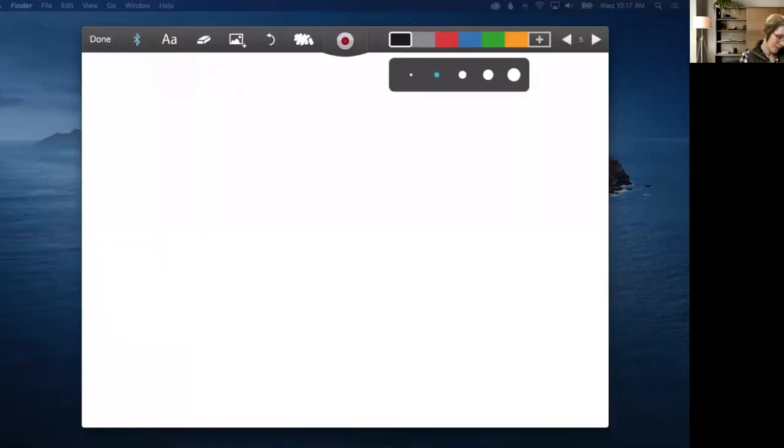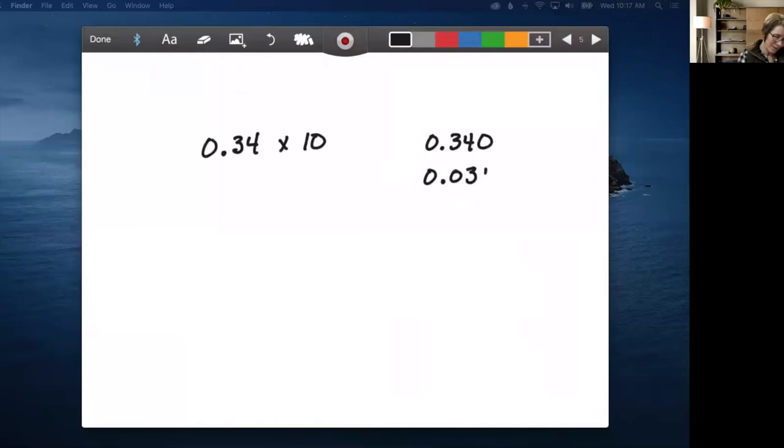So let's take another example. What if I have 0.34 times 10. And what might my students be tempted to do? What answers might we get? Well, we might get 0.340, because I added a zero to the end. Maybe I'll get 0.034. So clearly, that's going to cause some confusion if I say just add a zero to the end.